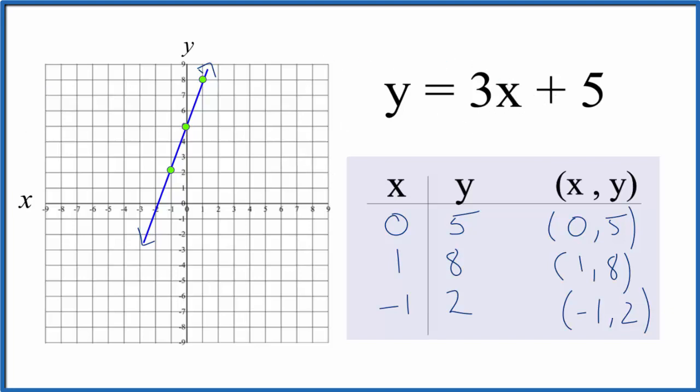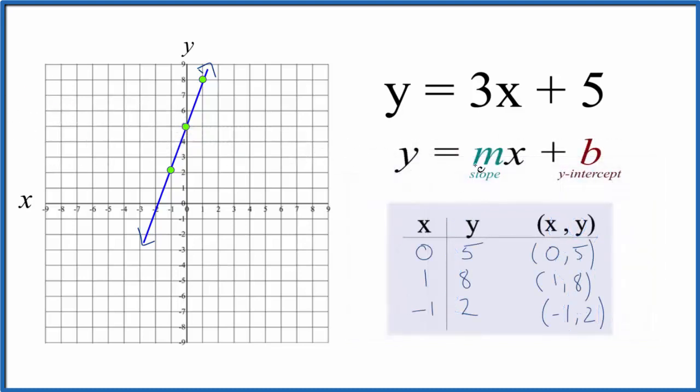Let's check our work with slope-intercept formula. So if y equals mx plus b, b is the y-intercept. That's positive 5. That's where our line is going to cross the y-axis. So we go to 5 and right there it is.